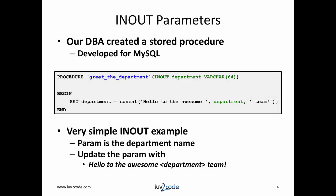Let's learn about in and out parameters. We'll pass in a parameter, and the stored procedure will read the parameter and update it with a value. In this example, our DBA created a stored procedure called greet_department. It simply reads the parameter name for the department and creates a new string based on the department name — "Hello to the awesome department team" — plugging in the value of the team name. We could get fancy with SQL calls to the database, but for now let's keep it simple.